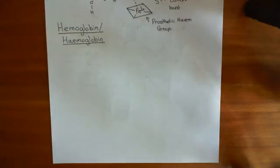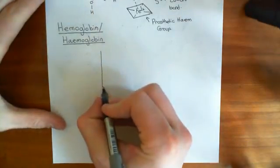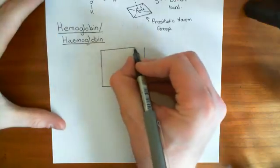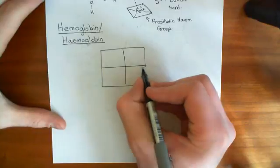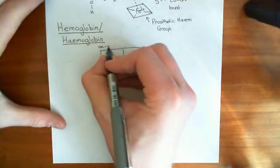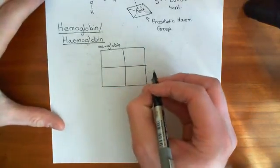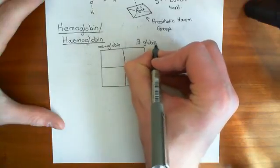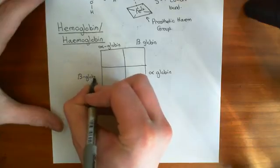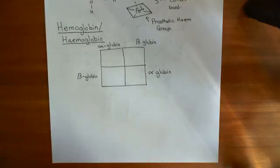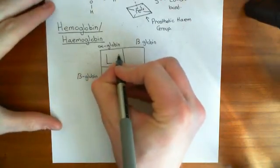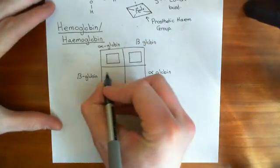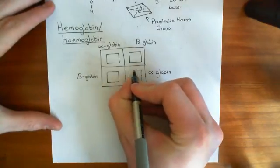The structure of hemoglobin is that it's made up of four subunits. Two of these proteins are known as alpha globins and two are beta globins, making a tetramer of alpha globin and beta globin — that is the protein structure underlying hemoglobin. In order to actually turn this into hemoglobin, we need heme groups added on, so we stick prosthetic heme groups onto every single one of the four subunits, giving hemoglobin four prosthetic heme groups in total.